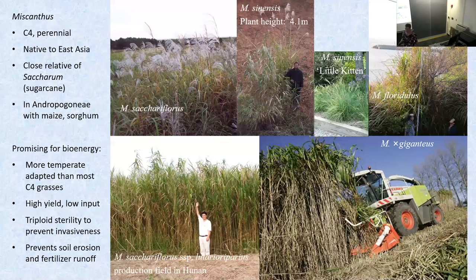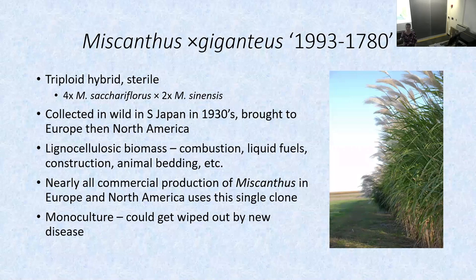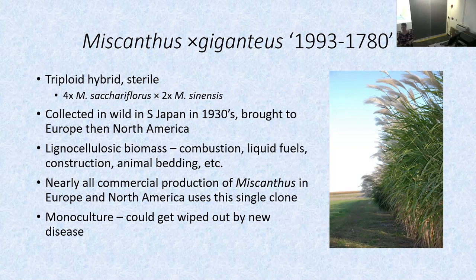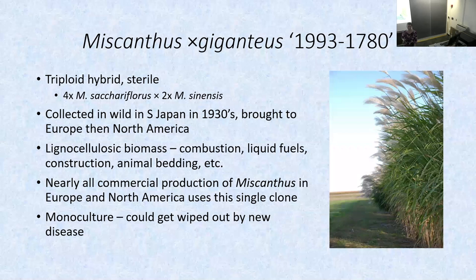I'm going to refer to this commercial biomass clone as 1993-1780 — that's its number in the Kew Botanical Garden. We had been calling it the Illinois clone, but it has nothing to do with Illinois. This is a sterile triploid hybrid between a tetraploid sacchariflorus and a diploid sinensis. It wasn't intentionally bred; it was collected in 1930 in the wild in Japan by a Danish botanist and brought to Europe, then eventually North America.